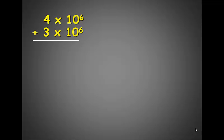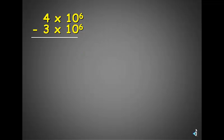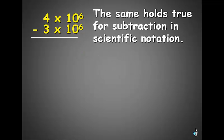So here we have 4 times 10 to the 6th plus 3 times 10 to the 6th. If the exponents are the same, we simply add or subtract the numbers in front and bring the exponent down unchanged. 4 plus 3 is 7, times 10 to the 6th. Or, 4 minus 3, or 1, times 10 to the 6th.